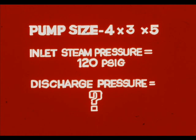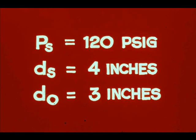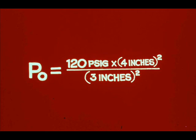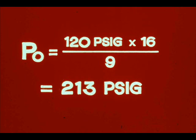Let's see how it works for a 4 by 3 by 5 steam-driven reciprocating pump when inlet steam pressure equals 120 PSIG. Remember SOS: steam, oil, stroke. Steam piston diameter is 4 inches and oil piston diameter is 3 inches. Substituting numbers in the formula: P sub O equals 120 PSIG times 4 inches squared over 3 inches squared. P sub O equals 120 PSIG times 16 over 9, equals 213 PSIG to the nearest whole number.